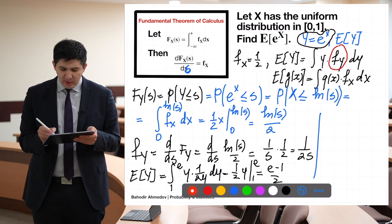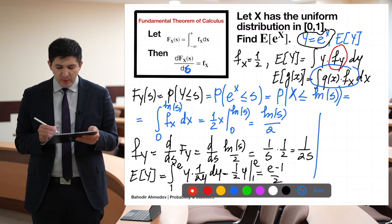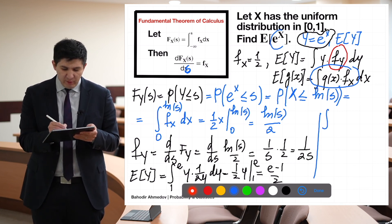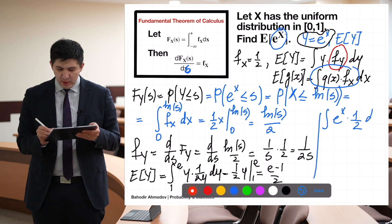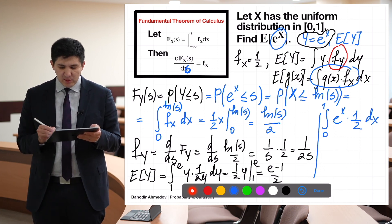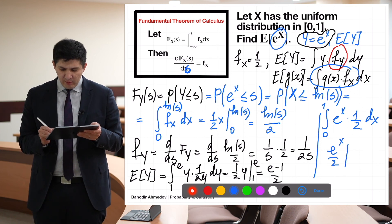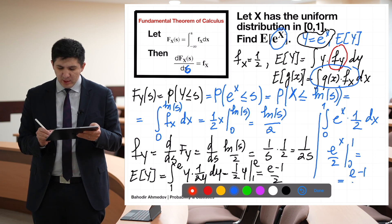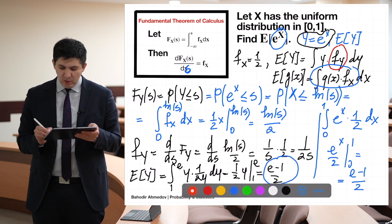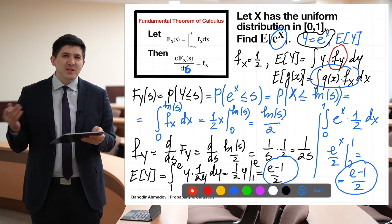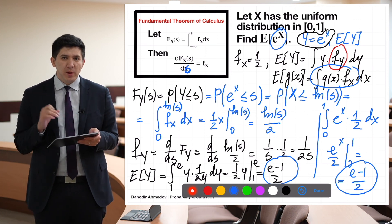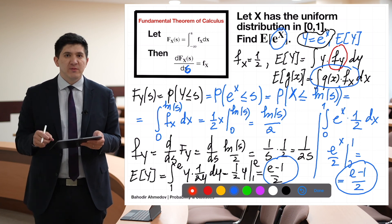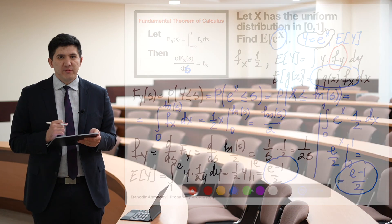We could also find the expected value using the formula directly: integrating g(X) times the density of X. So E[Y] equals the integral from 0 to 1 of e to the X times 1/2 dx, which gives e to the X over 2 from 0 to 1, equaling e minus 1 divided by 2 as well. The two results are the same. The second way is easier, but our purpose was to learn how to derive density functions of new variables using cumulative functions. Thank you very much for your attention. I hope this was helpful.